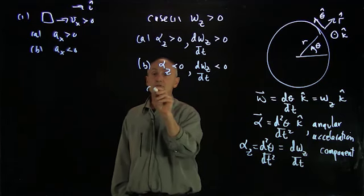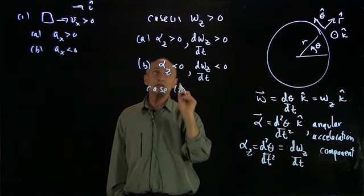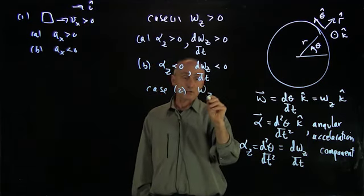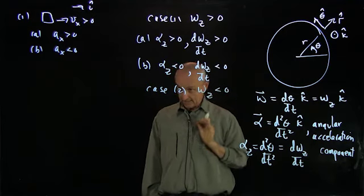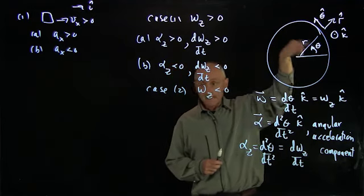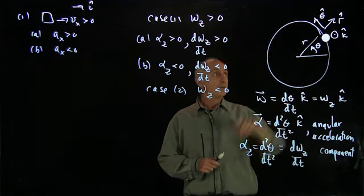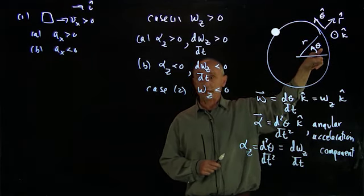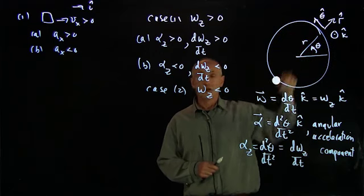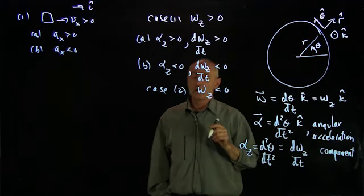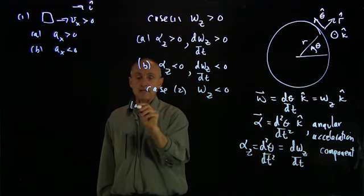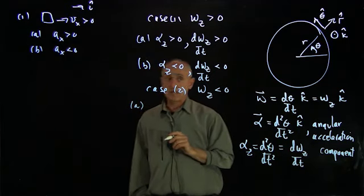Now, let's look at case 2, where this is always a little bit complicated for circular motion, where ω_z is less than 0. In that case, the object is moving in the clockwise direction, because the angle theta is decreasing, corresponding to clockwise motion. So in that case, once again, let's consider the two examples.